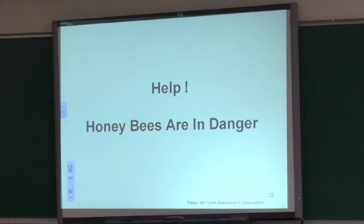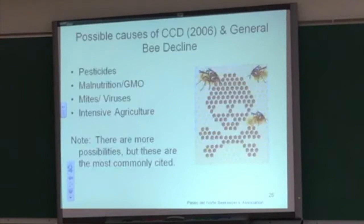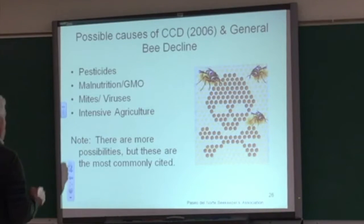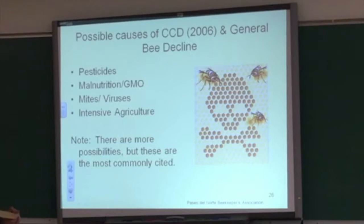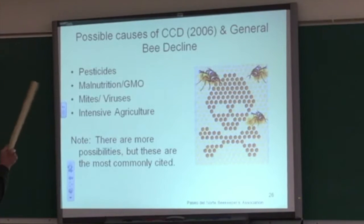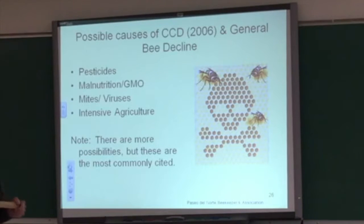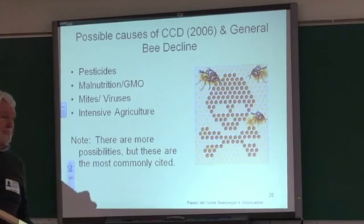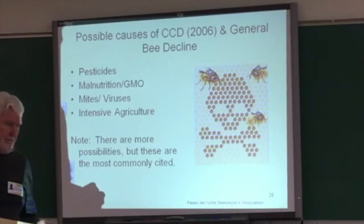The main reason why this presentation is so important is because honey bees are now on the endangered species list. Many of the possible causes to the bees' decline all around the world is due to pesticides, malnutrition, mites, viruses, and intensive agriculture. There are a lot more possibilities, but these are the most commonly cited.